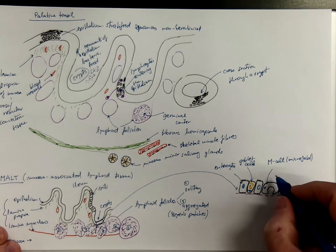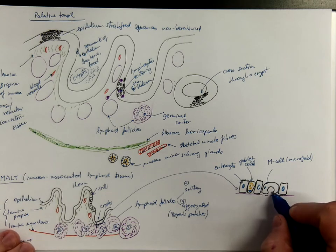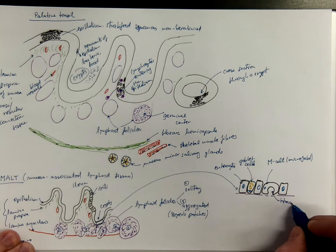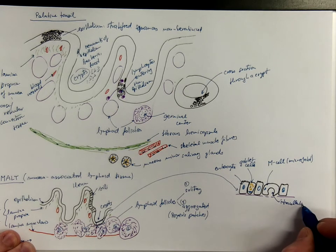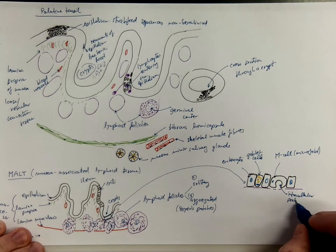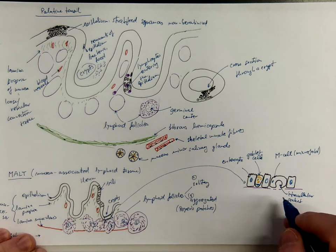The microfold cells have this intracellular pocket. And there is a discontinuous basal membrane.